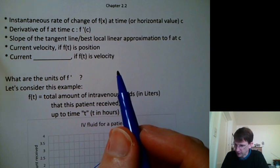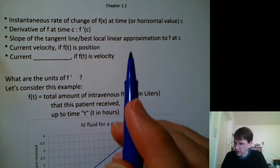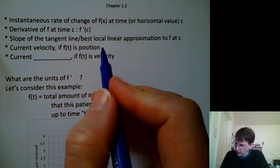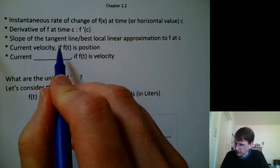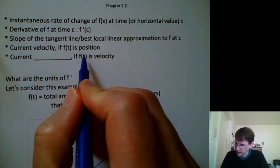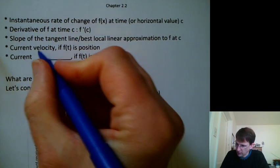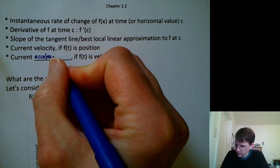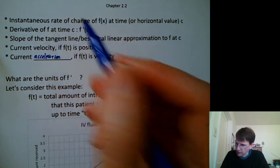Take a sec to think about what word might go here. If f of t is a position, then its derivative is velocity. So by analogy, if f of t is velocity, what's the rate of change of velocity? The word for that is acceleration.